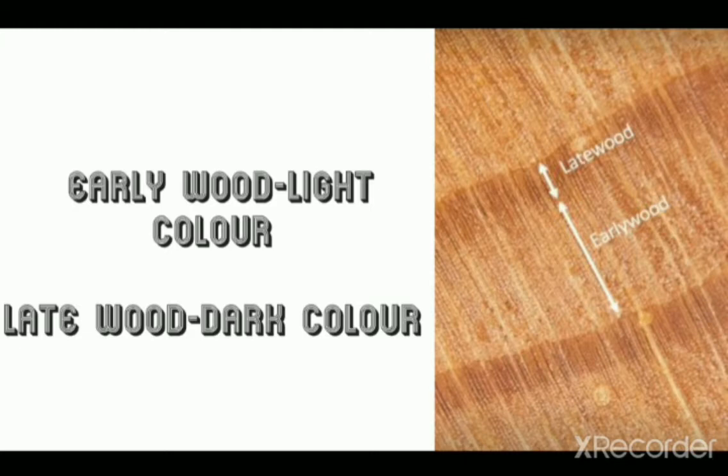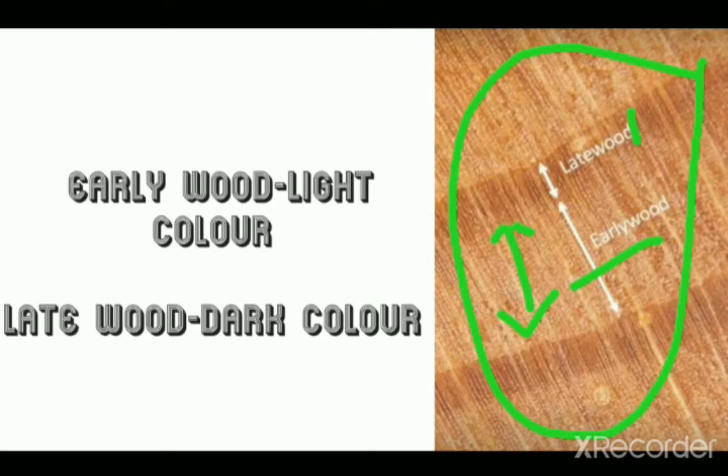In this slide you can see late wood and early wood represented in a stem. Early wood is light in color and less dense, while the late wood structure is more dense in color compared to early wood. Early wood occupies more area in the stem and late wood occupies less area in the stem.